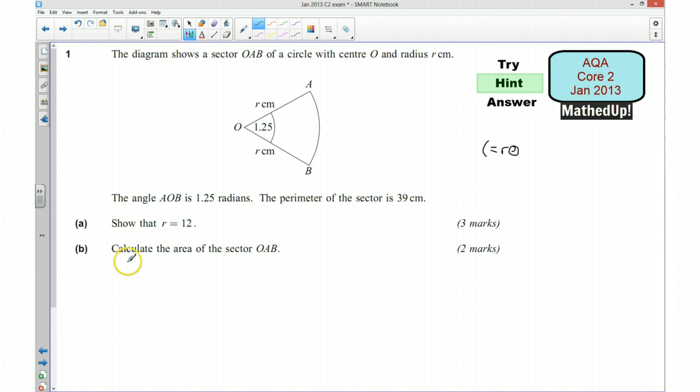Okay, and the second part asks us to calculate the area of the sector OAB. So in this part we need to use our formula, and the area is equal to a half r squared theta. The area is equal to half r squared theta, so we know what r is and we know what theta is, so hopefully we'll be able to work that out as well. If you'd like to now pause the video and have a go.